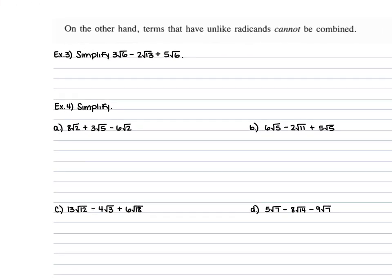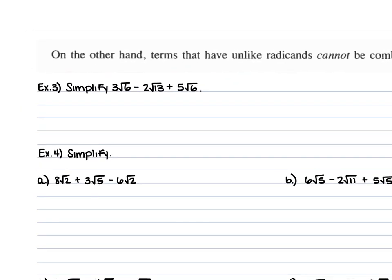For example 3, we have 3 square root of 6 minus 2 square root of 13 plus 5 square root of 6. The two terms with square root of 6 combine: 3 square root of 6 plus 5 square root of 6. We don't have another square root of 13, so we cannot combine that one. So we get 8 square root of 6 minus 2 square root of 13.